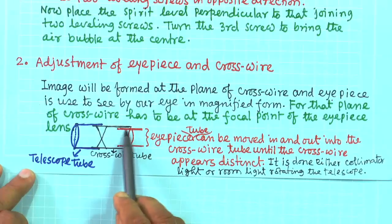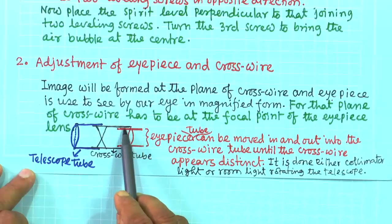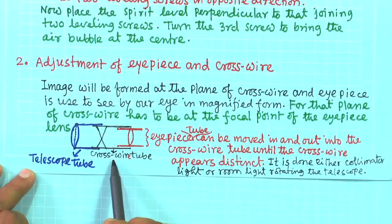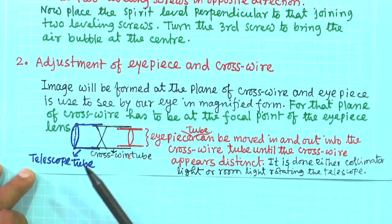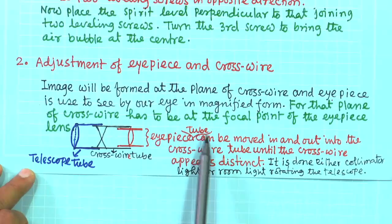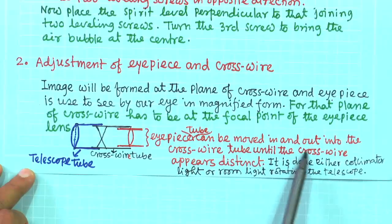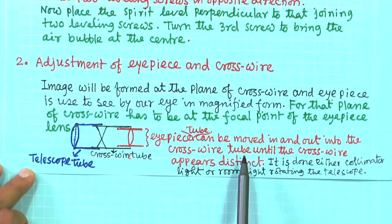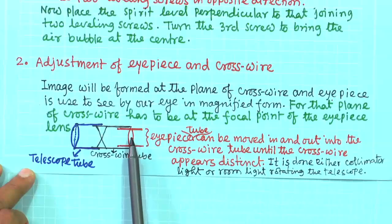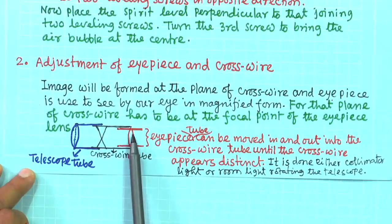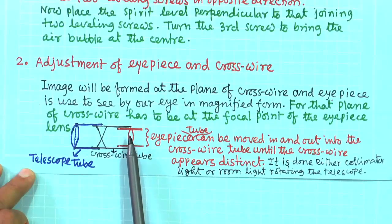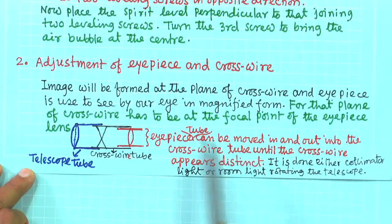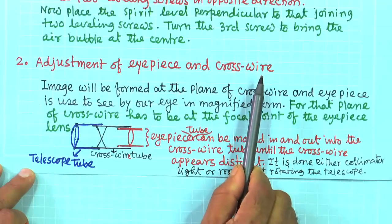The eyepiece lens is fixed in another tube, and that eyepiece tube can be inserted into the cross wire tube. The eyepiece tube can be moved in and out until the cross wire appears distinct, which means the cross wire is at the focal point of the eyepiece.